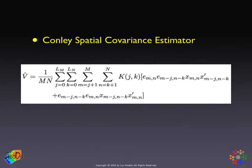The idea is the same as before: we have this variance estimate and plug it in. We keep the OLS, but the OLS now has a robust variance-covariance estimate.